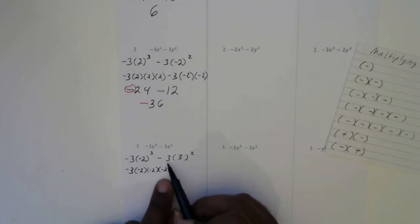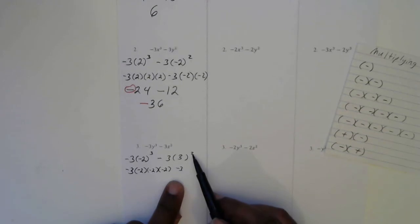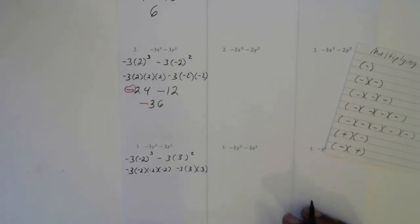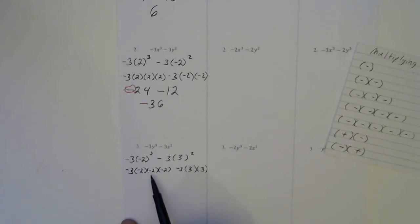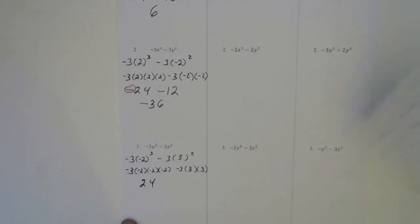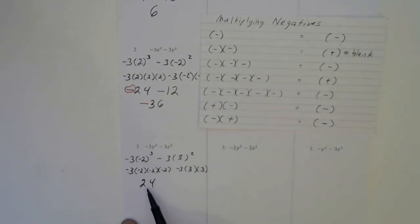Next, we have a negative 3, and this 3 right here needs to be written twice, so we're going to write that twice, put a couple parentheses in here, and then put the 3 in there. Now we're ready for multiplication. 3 times 2 is 6, 6 times 2 is 12, and 12 times 2 is 24. Now I have how many negatives? 1, 2, 3, 4 negatives. The rule for four negatives is: four negatives is a positive, so this will remain positive 24.